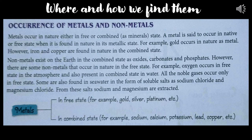Those metals which are less reactive — like gold and silver — exist in nature in free state because they are noble metals and do not react with much. But other metals like iron, copper, and aluminum are reactive, and based on their reactivity they are available in nature in different forms — some as oxides, some as carbonates — each having their own state of reactivity.